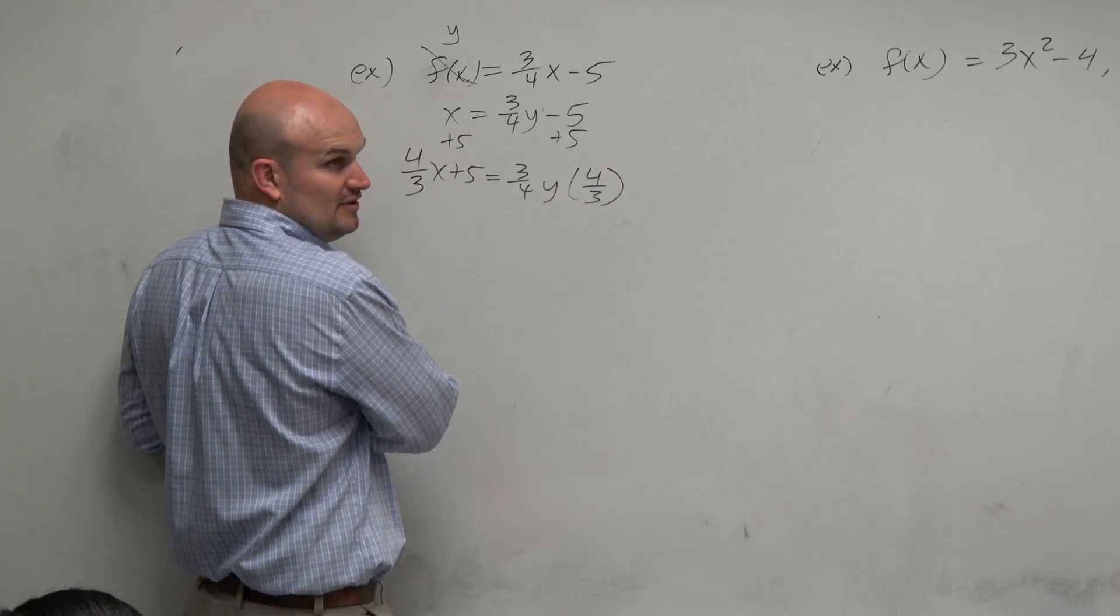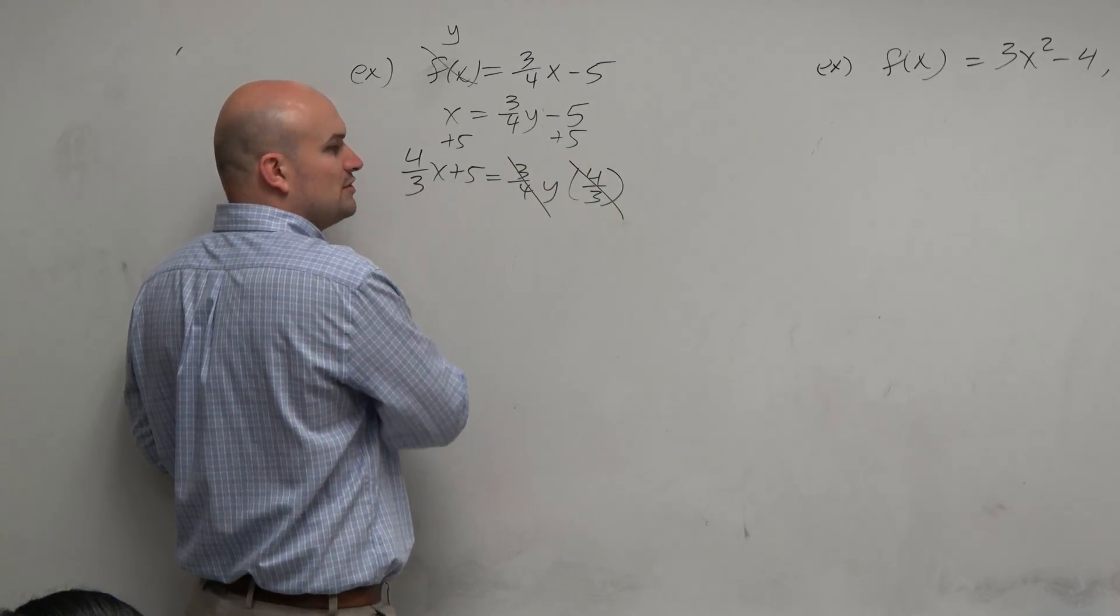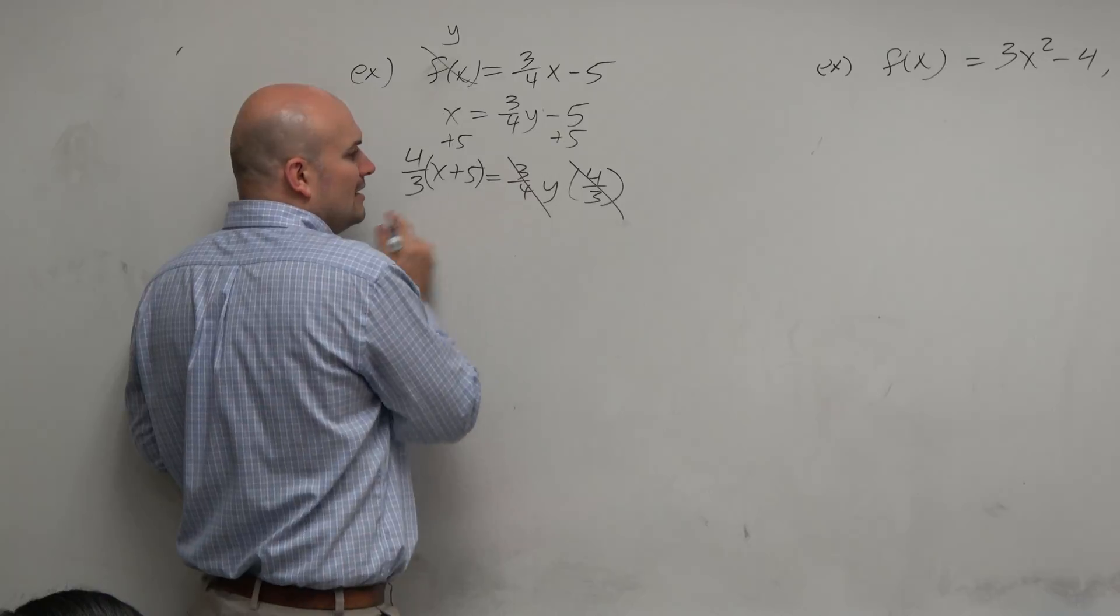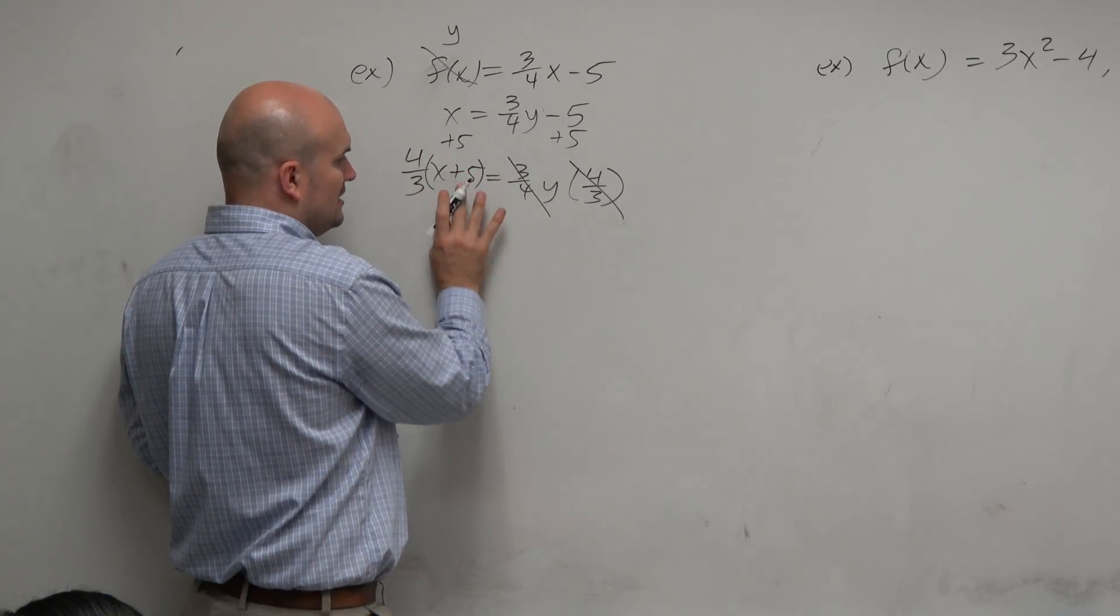Some students will take the answer and leave it like this, which always gets them a wrong answer. Because you're not multiplying four-thirds times x, you're multiplying four-thirds times x plus 5. So make sure that you go back and write it like this.